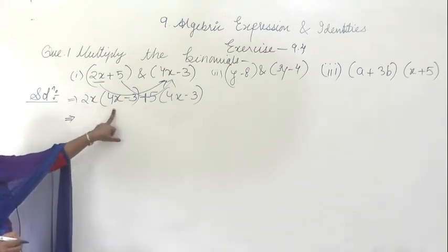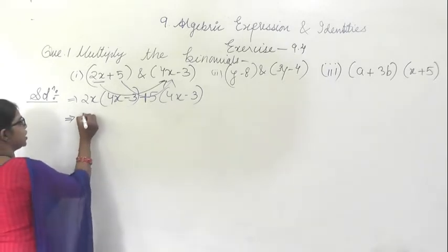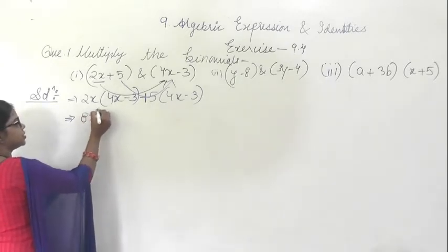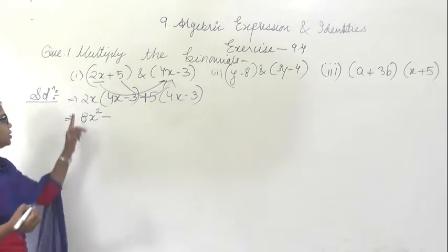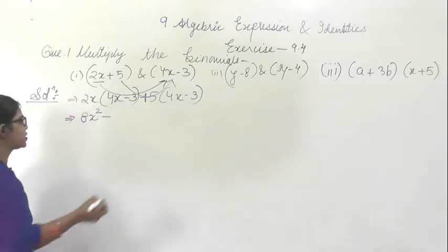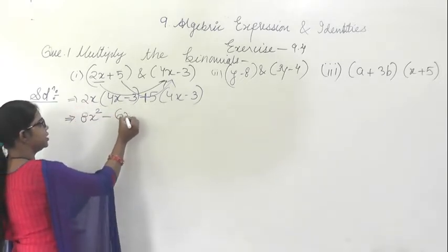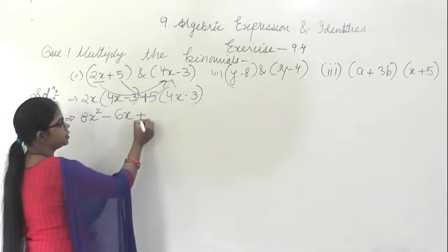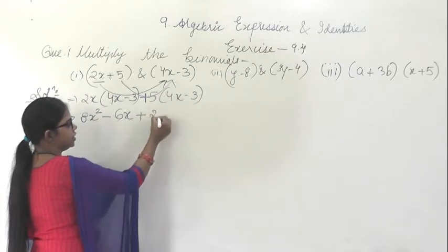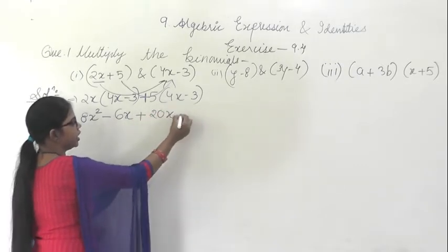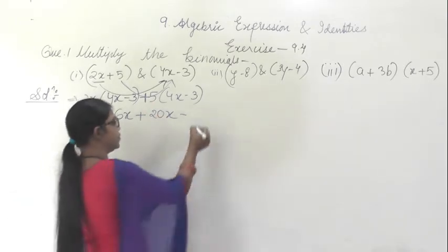See, 2x into 4x is 8x squared, minus 2 into 3 is 6x, and x into x is x squared. Plus 5 into 4x is 20x, minus 5 into 3 is 15.